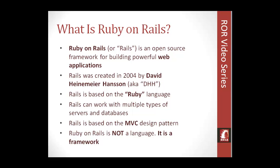Rails can work with multiple types of servers and databases. It has its own server called WEBrick, but it can also run on Apache and other servers as well. As far as databases, it comes with SQLite 3 as a default, which is a serverless database, but it can also be used with MySQL and PostgreSQL databases as well.